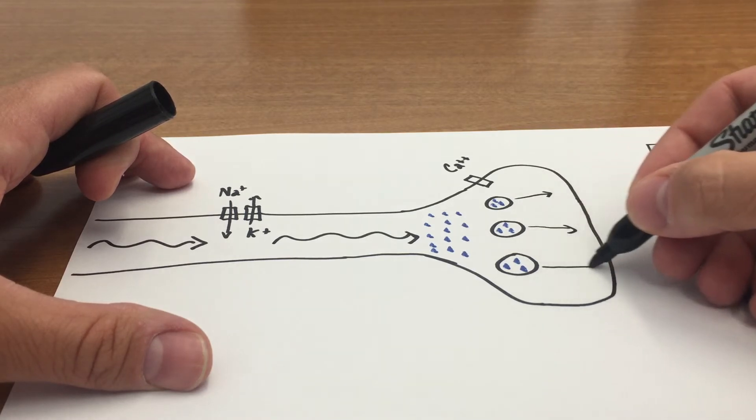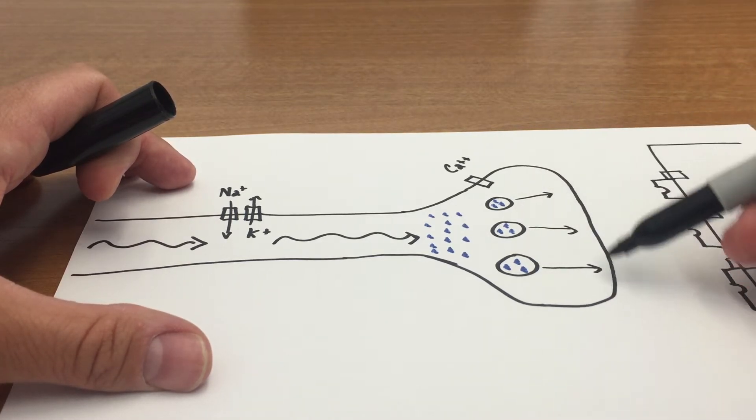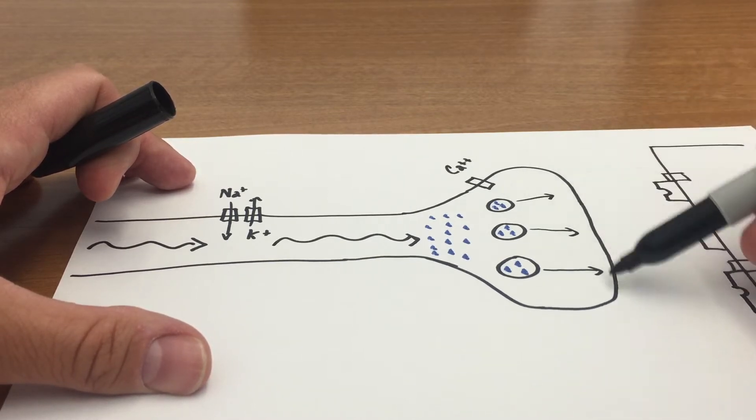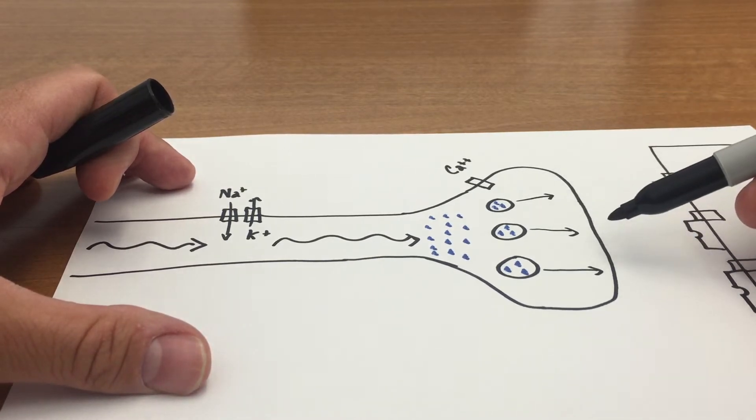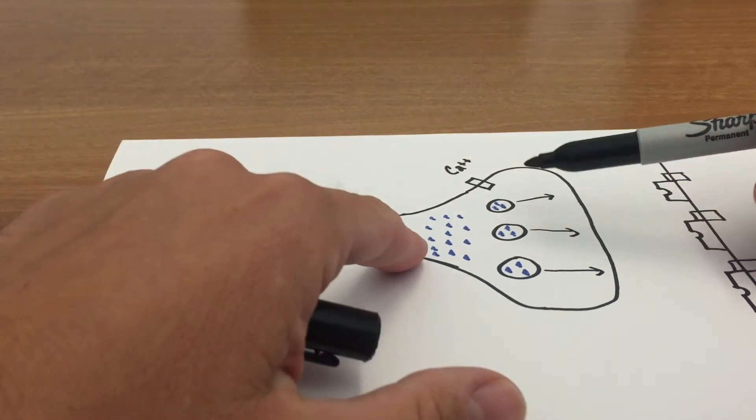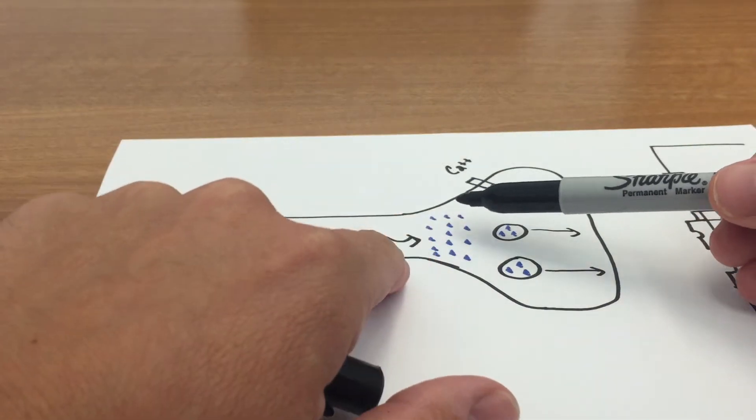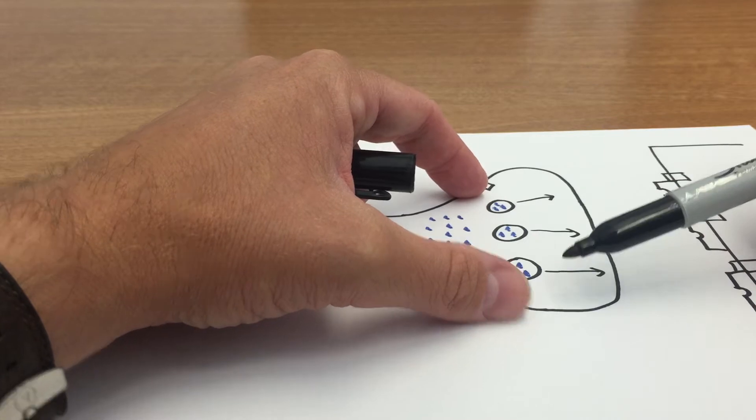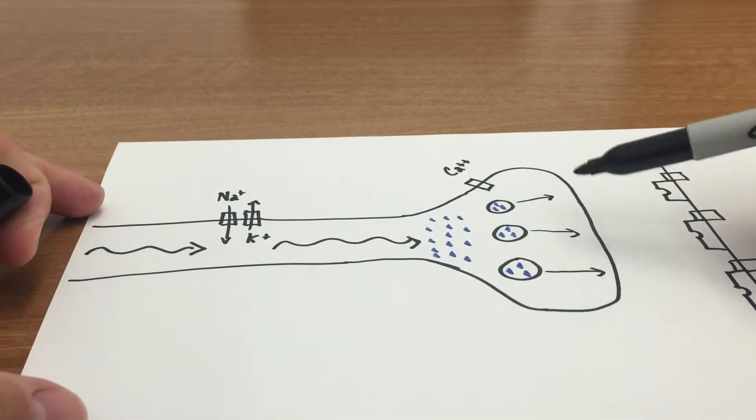They translocate or they mobilize and they move toward the active site of the cell membrane of the terminal axon, and that translocation or that mobilization is initiated by the fact that this wave of depolarization gets in and depolarizes this part of the axon.